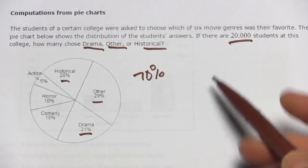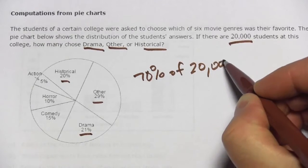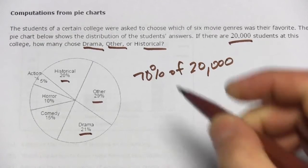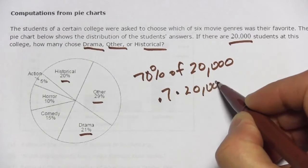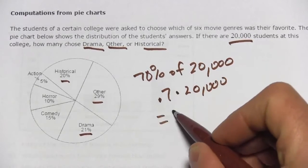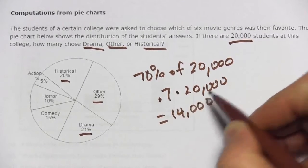What we're doing really is 70% of 20,000. That's going to be 0.7 times 20,000, and that is 14,000 students.